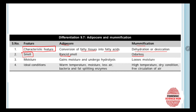The next feature is moisture. In adipose ear, the body is going to gain moisture and undergo hydrolysis. For the conversion of fatty tissues into fatty acids, we need two processes: hydrolysis and hydrogenation. In hydrolysis we need water, so moisture is very important for adipose ear formation. In mummification, the opposite happens — we lose moisture, and all the water present in the body is evaporated.